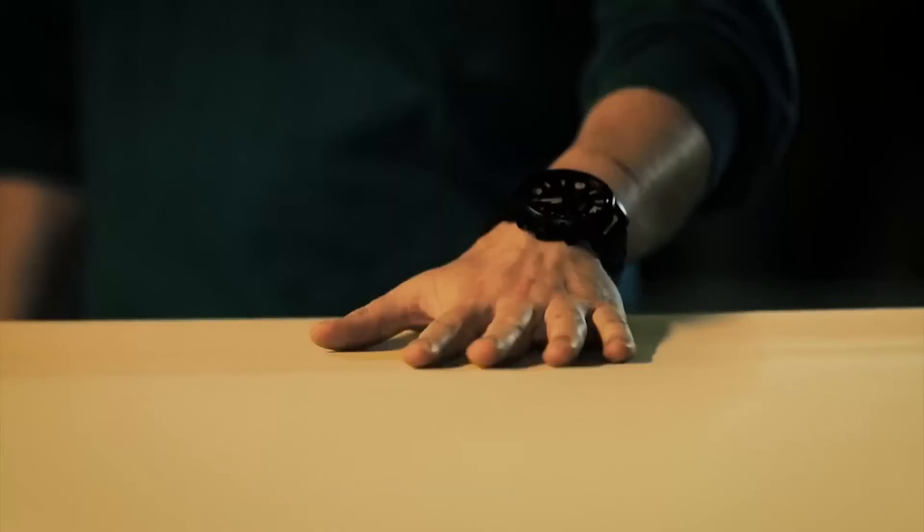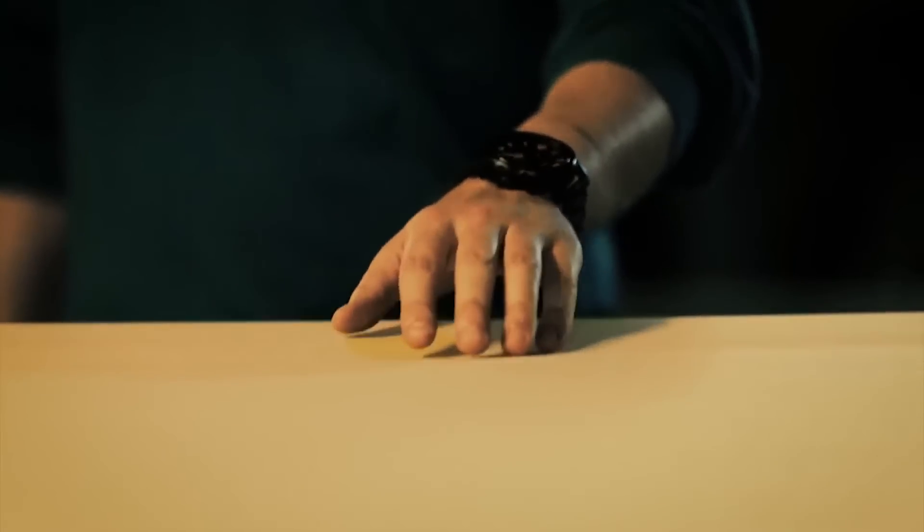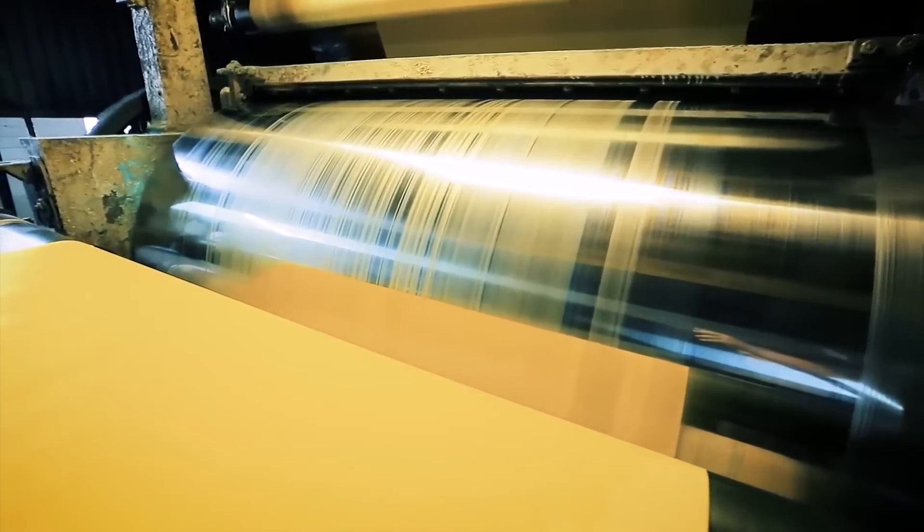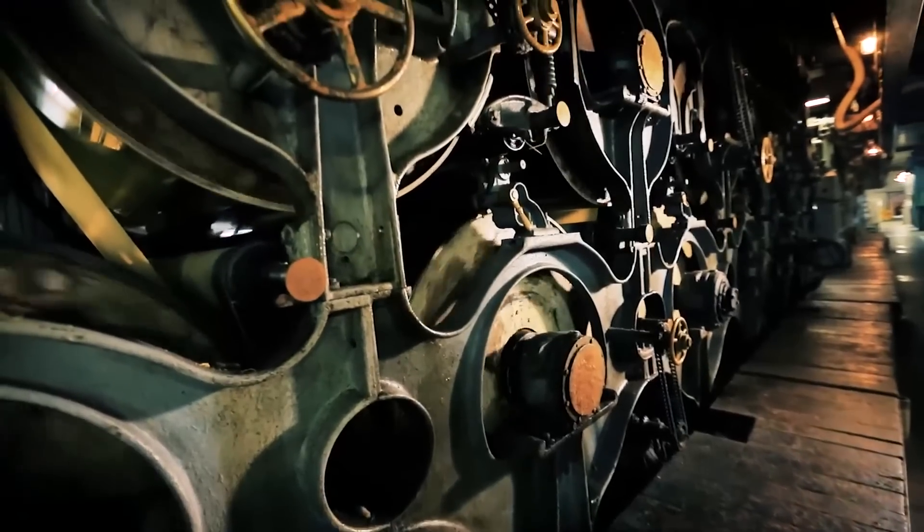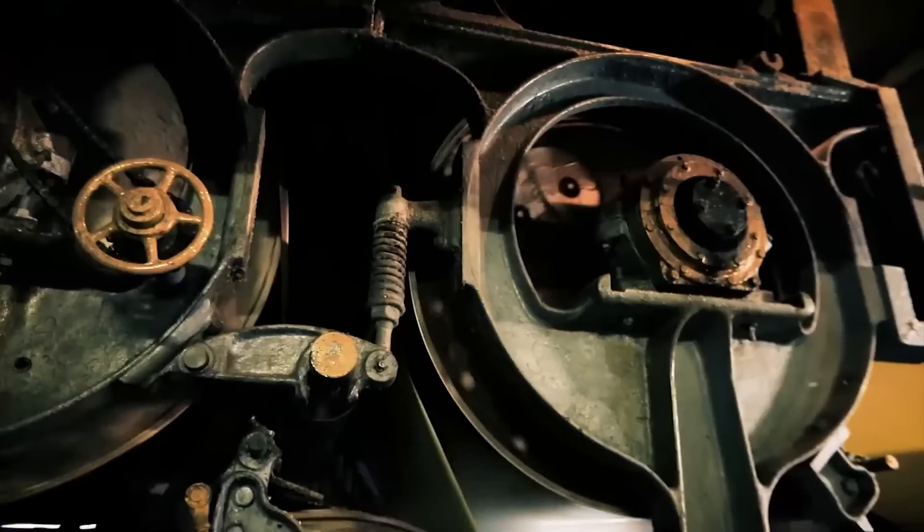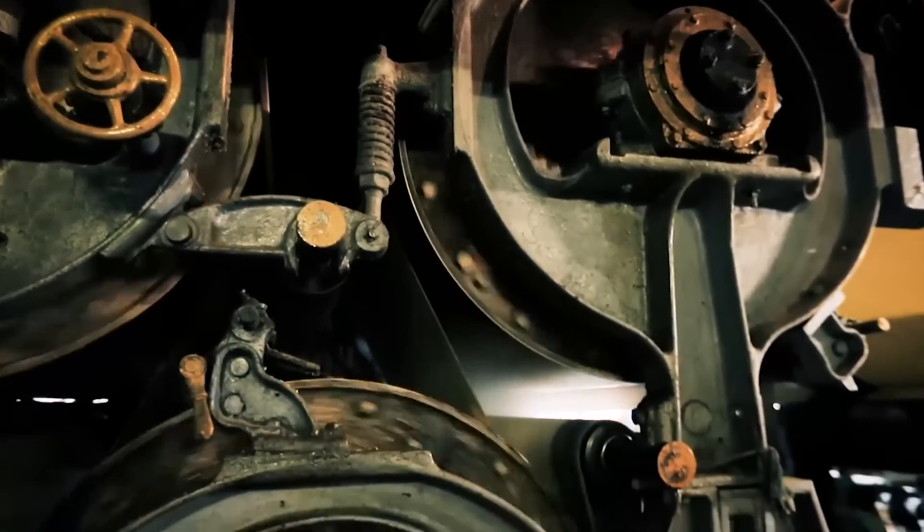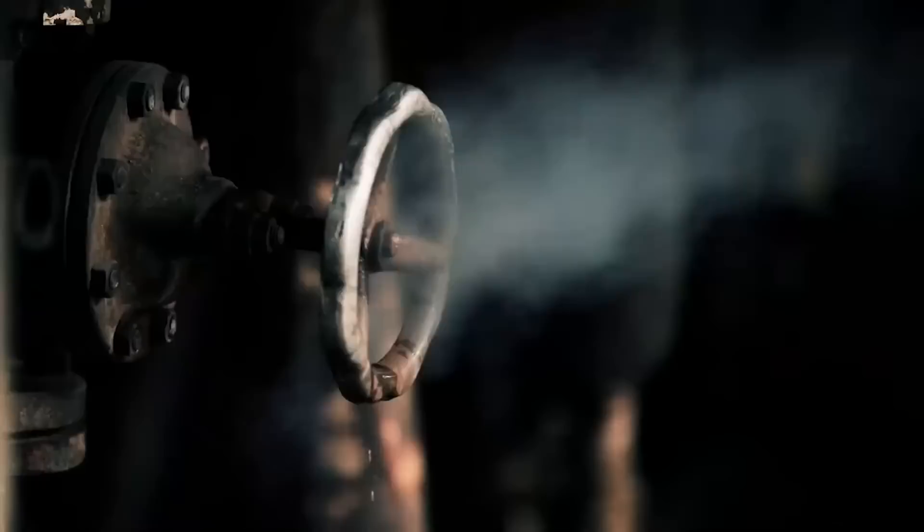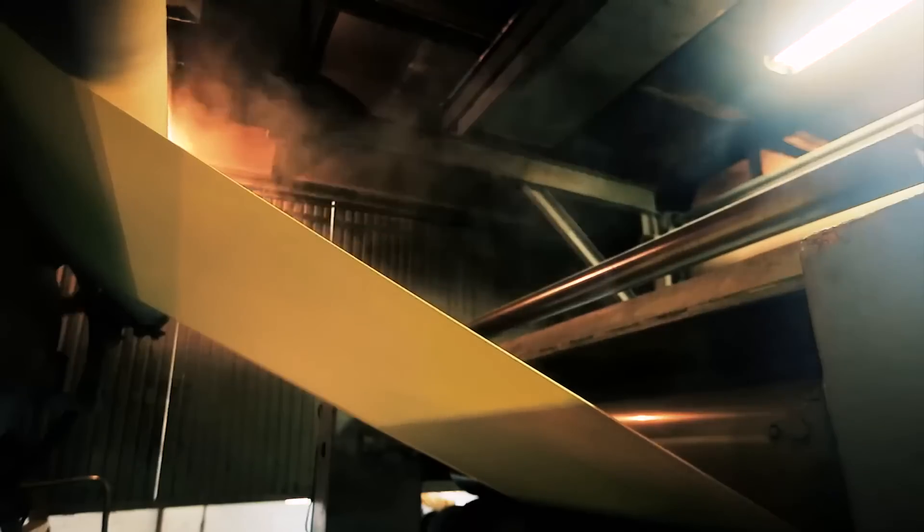At this stage, you can even touch it without fear of damaging it. The following process is similar to what happens with laundry after washing. While still wet, paper passes through a series of cylinders. Some extract it, others heat it from inside with hot steam to dry it, and the third polish it.